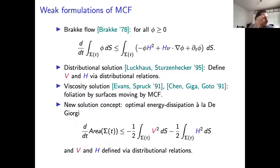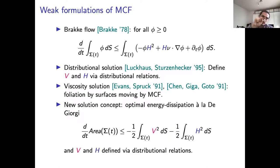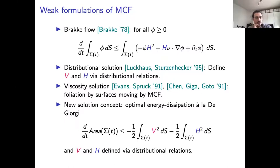Because phi may depend on time, the time derivative can also fall on phi, giving a transport term in the middle. This describes exactly what happens when, for example, a shrinking sphere enters and then leaves the support of phi — just by chain rule if you plug in the parameterization. There's another solution concept due to Luckhaus and Sturzenhecker, who say that v and H can each be defined through integration by parts.